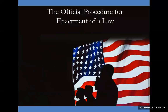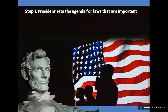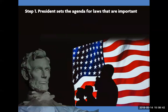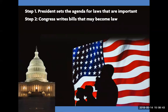So let's use what we have learned to put these steps in order: the official procedure for enactment of a law. Step 1: The President sets the agenda for laws that are important. Step 2: Congress writes bills that may become law.